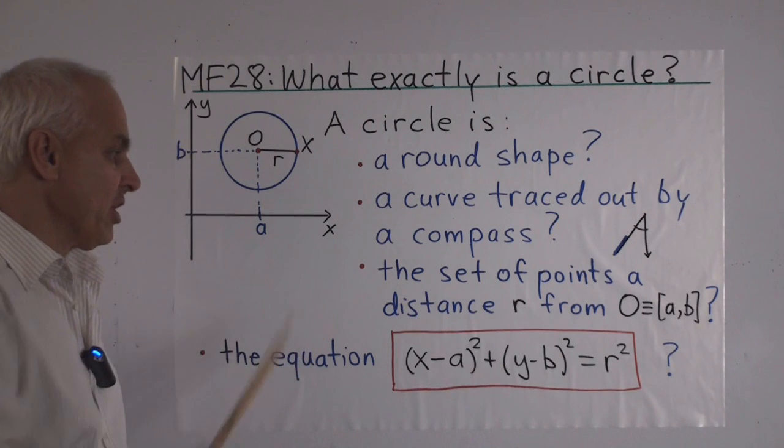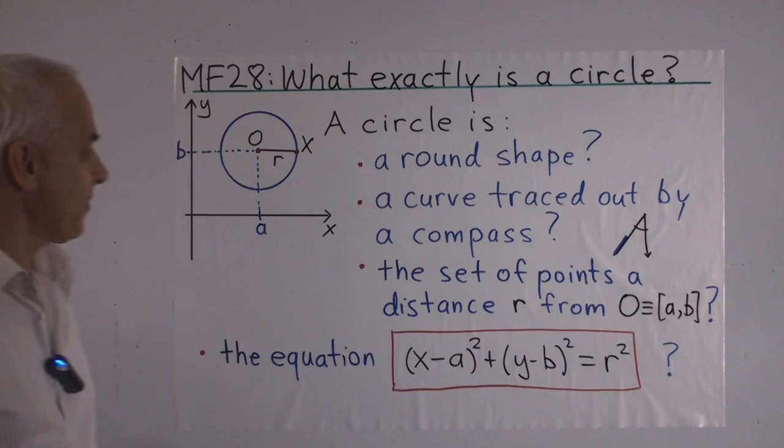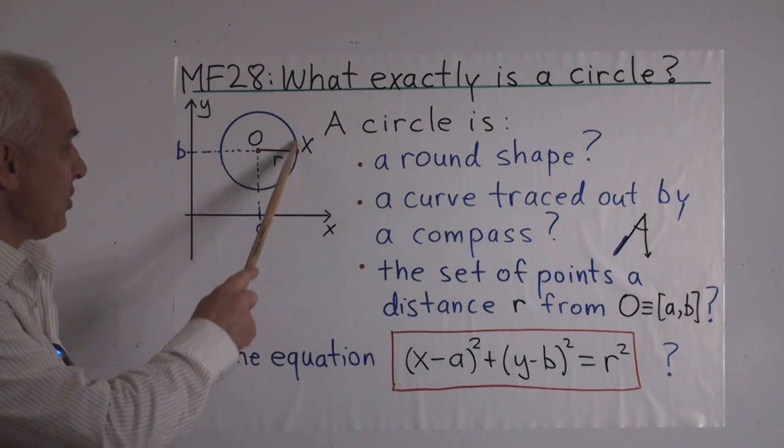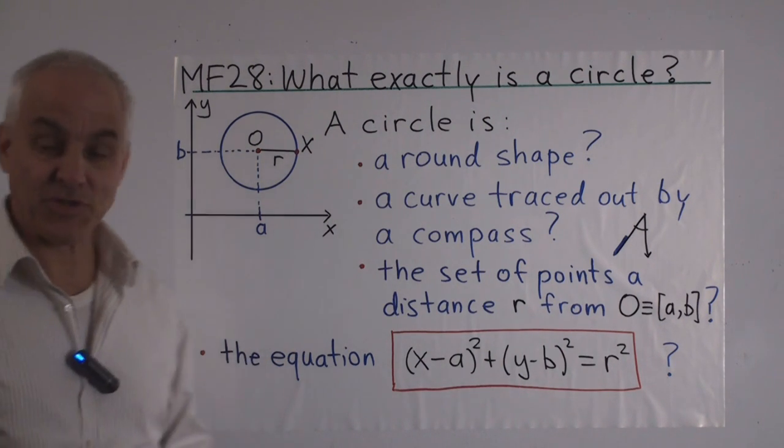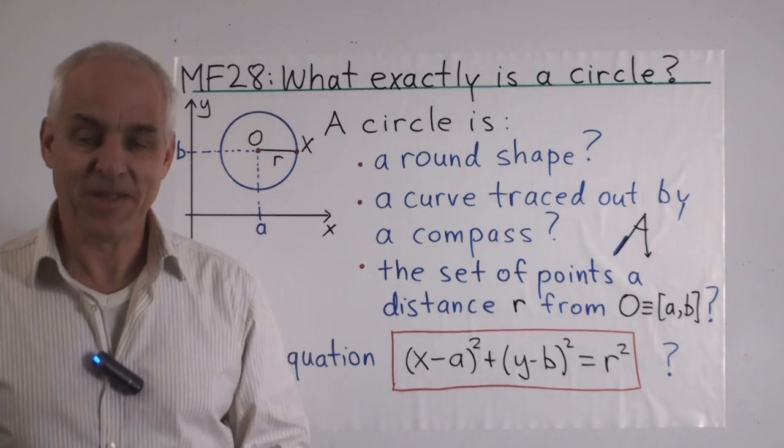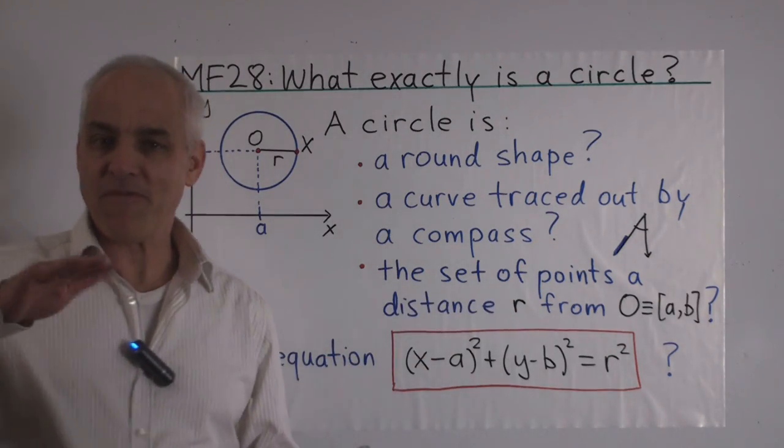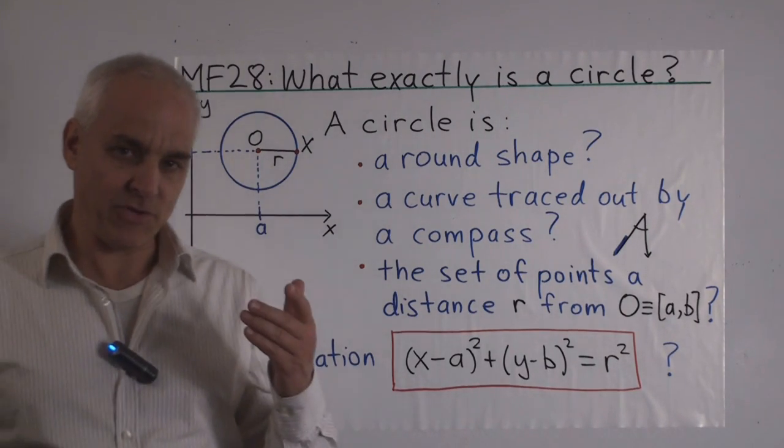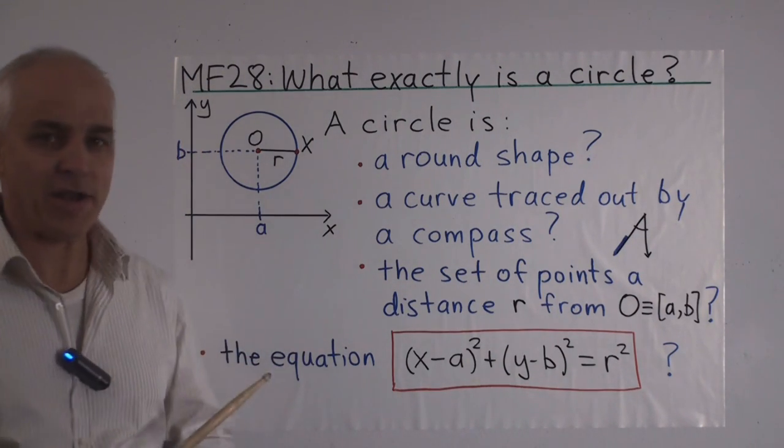A very common definition is that a circle is a set of points which are a distance r from a fixed point O. So here is a point O with coordinates a, b, and we're looking at all those points x whose distance from O is exactly r. Now there are two major difficulties with this definition. One is that it involves an infinite set of points, which in fact does not exist. The more carefully you think about what you actually mean by this infinite set, the more fuzzy and vague it actually becomes. Secondly, we'll see that when we go to higher geometry, to more elaborate curves, that there will be a good reason why this is not an appropriate definition.